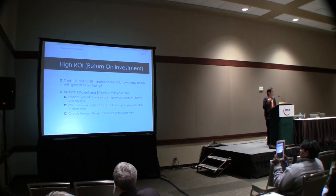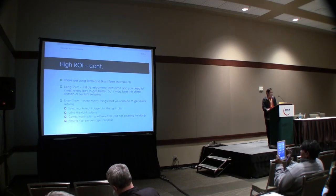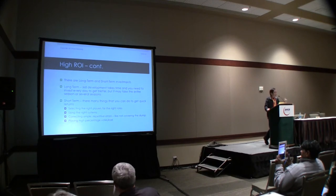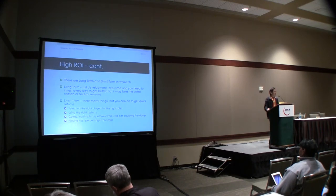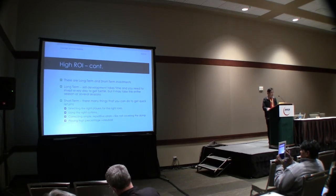You want to be both efficient and effective. Efficient is about prioritizing the key things you need to work on and the easy stuff you can fix. Being effective means using the right methodology and drills to help learning happen as fast as possible. ROI has two components: short-term and long-term. Long-term is skill development — getting to be better passers, servers, hitters. Short-term includes selecting the right players for the right role, selecting the right systems, correcting simple repetitive errors, and playing high-percentage volleyball.